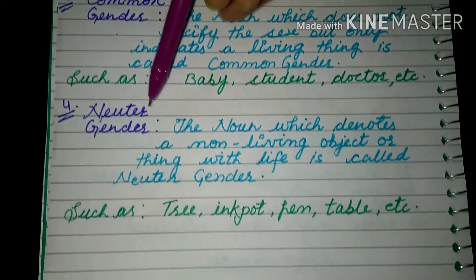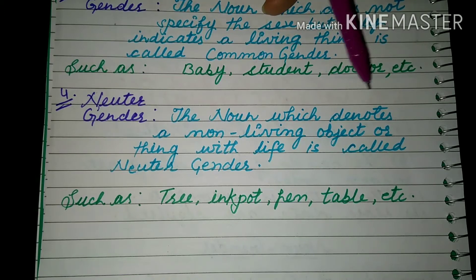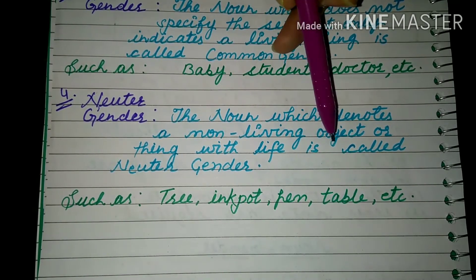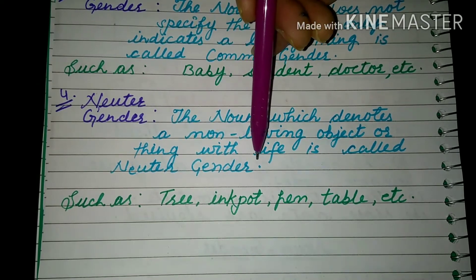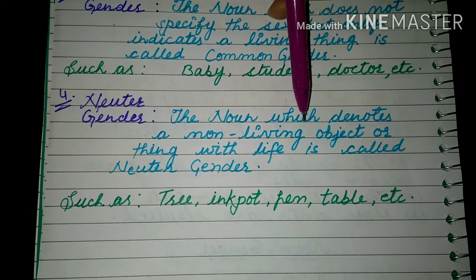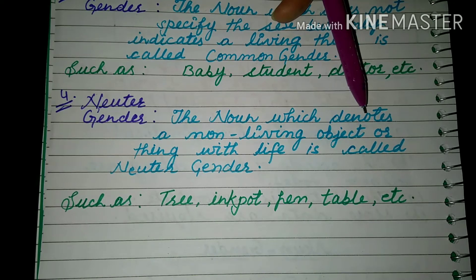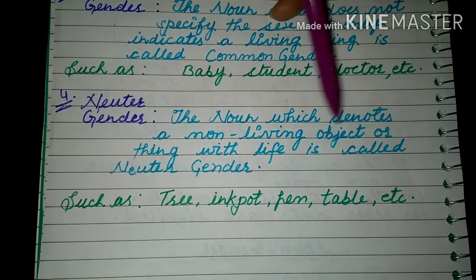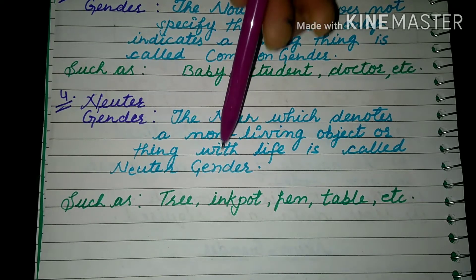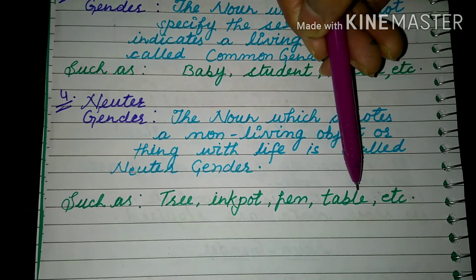Now the fourth kind is neuter gender. Neuter gender means the noun which denotes a non-living object or thing without life. Non-living things that have no life are neuter gender. For example: tree, ink pot, pen, table, etc.